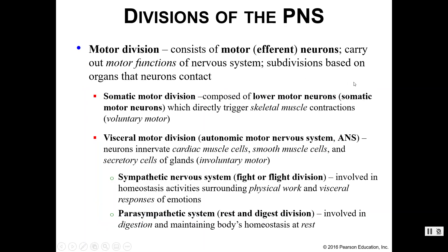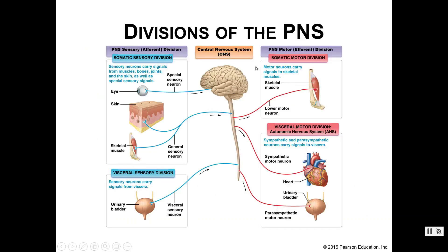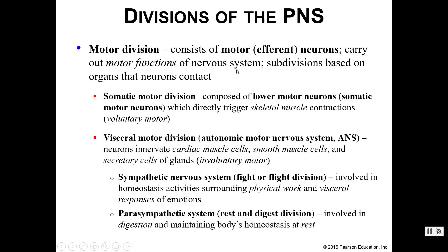Then we have your motor division. This contains motor neurons, which you might hear termed efferent neurons. These neurons carry the motor output information from your central nervous system, sending it back out to the body to produce motor responses. We can send motor signals to the same places we received sensory information from. In the somatic motor division, we find lower motor neurons, also called somatic motor neurons, which innervate skeletal muscles — this is how we achieve voluntary motor movements.